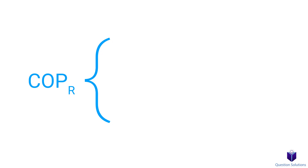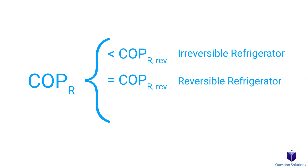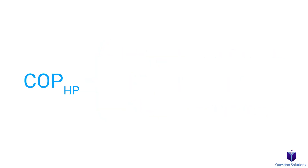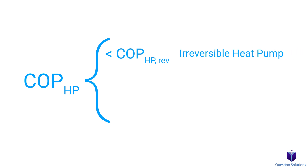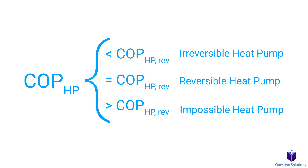We can compare COP values to figure out what type of refrigerator it is. If the reversible COP is less than the actual COP, it's an irreversible refrigerator. If it's equal, then it's a reversible refrigerator. And if it's greater than the actual COP, it's an impossible refrigerator. The same is true for heat pumps. Keep in mind that in real life, refrigerators and heat pumps will never reach the COP of reversible refrigerators or heat pumps.